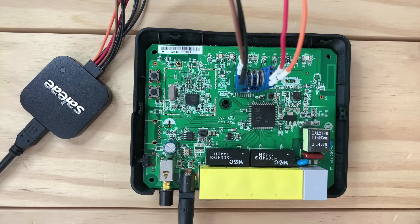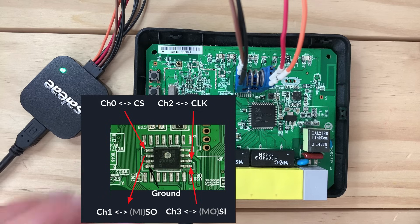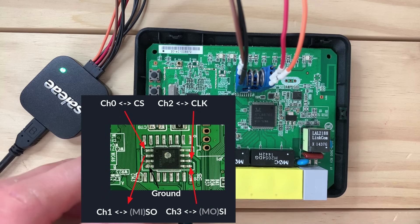After that, I connected the logic analyzer according to the datasheet pinout: channel 0 to chip select, channel 1 to SO data line, channel 2 to clock, and channel 3 to SI data line. The logic analyzer will allow us to sniff the traffic.